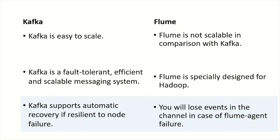Kafka supports automatic recovery and is resilient to node failure. If some nodes go down, Kafka will recover and will not drop any messages — it will keep pushing all the records. This is because Kafka uses offsets and you commit those offsets, so whenever there is a failure, Kafka goes back to the previous commit. In contrast, in case of a Flume agent failure, you can lose data because Flume does not have a recovery mechanism like Kafka.